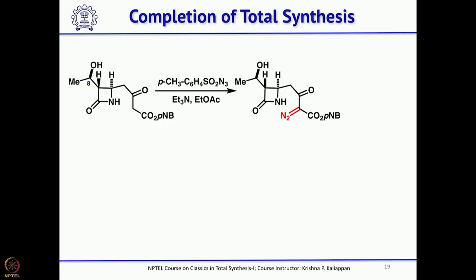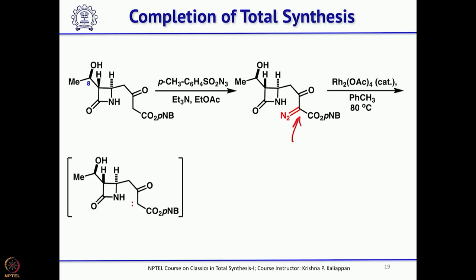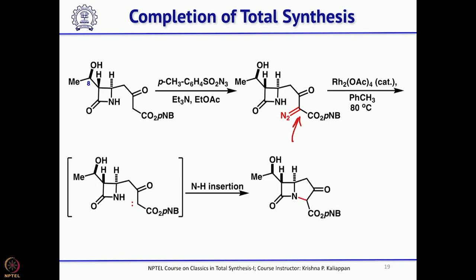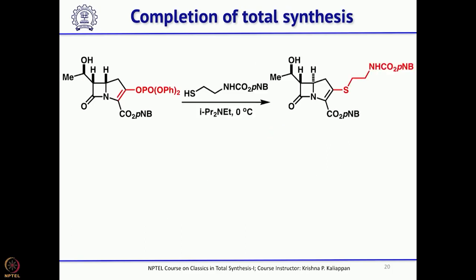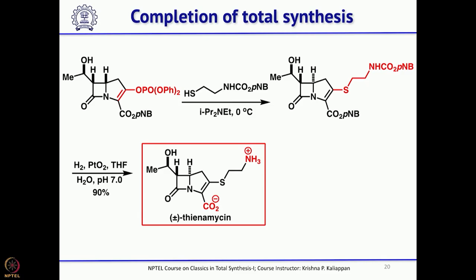Following hydrolysis, the stereocenter is inverted. One then follows the same process to reach the key intermediate: diazotization, carbene insertion, enol ether formation via diphenylphosphoryl chloride, and 1,4-addition/elimination with thiol, followed by removal of the para-nitrobenzyl group, to give thienamycin. This racemic method allows synthesis in larger quantity compared to the earlier enantiospecific route.